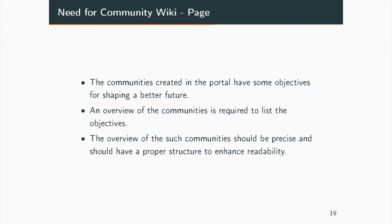Now for the third module: wiki, explained by Naveen. In the previous system, the description of a community was only a single paragraph edited at the time of community creation. But as time goes on, communities develop a vision and objectives which need to be followed. Such an overview of the community should be listed in a more structured manner so that a new user who wants to join can get the whole overview of the community. That is where the wiki page for the community comes in.